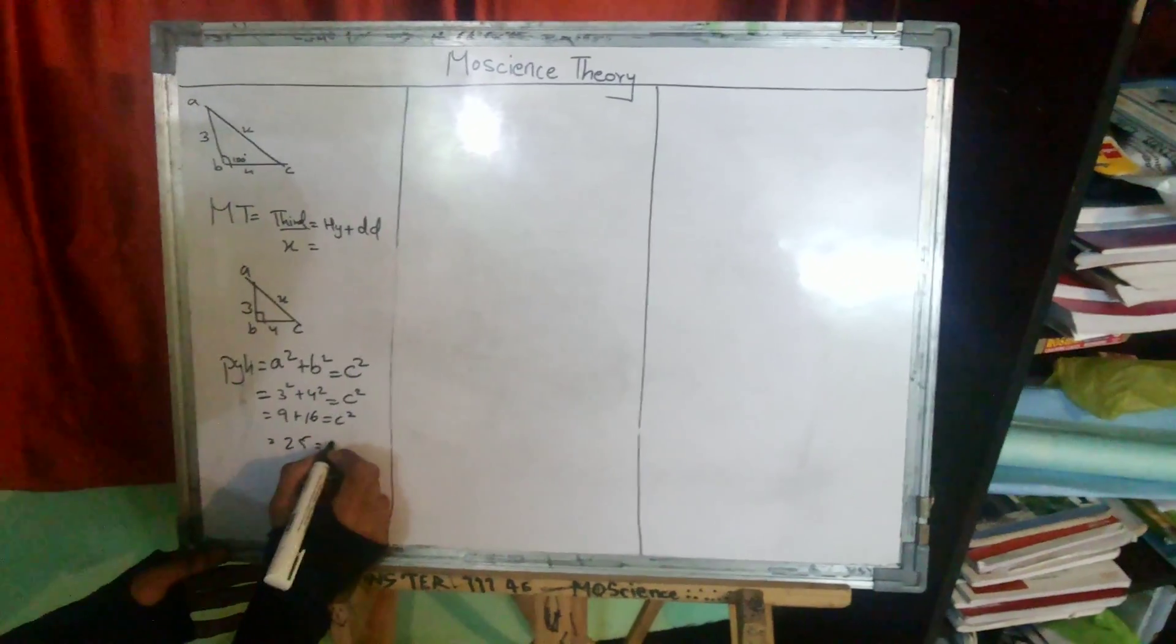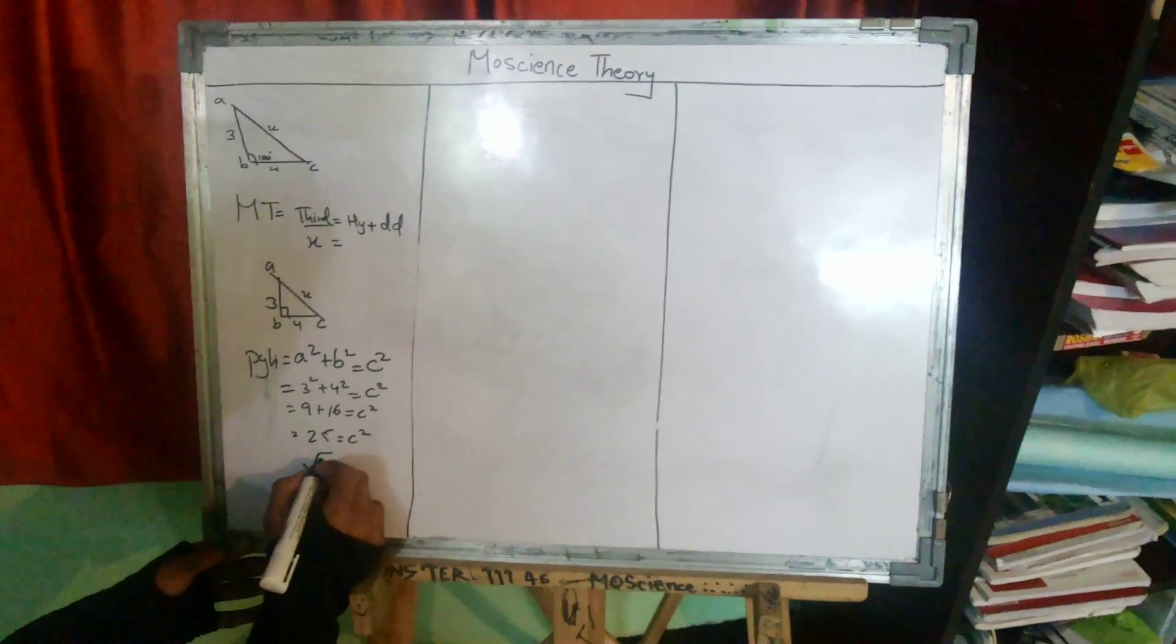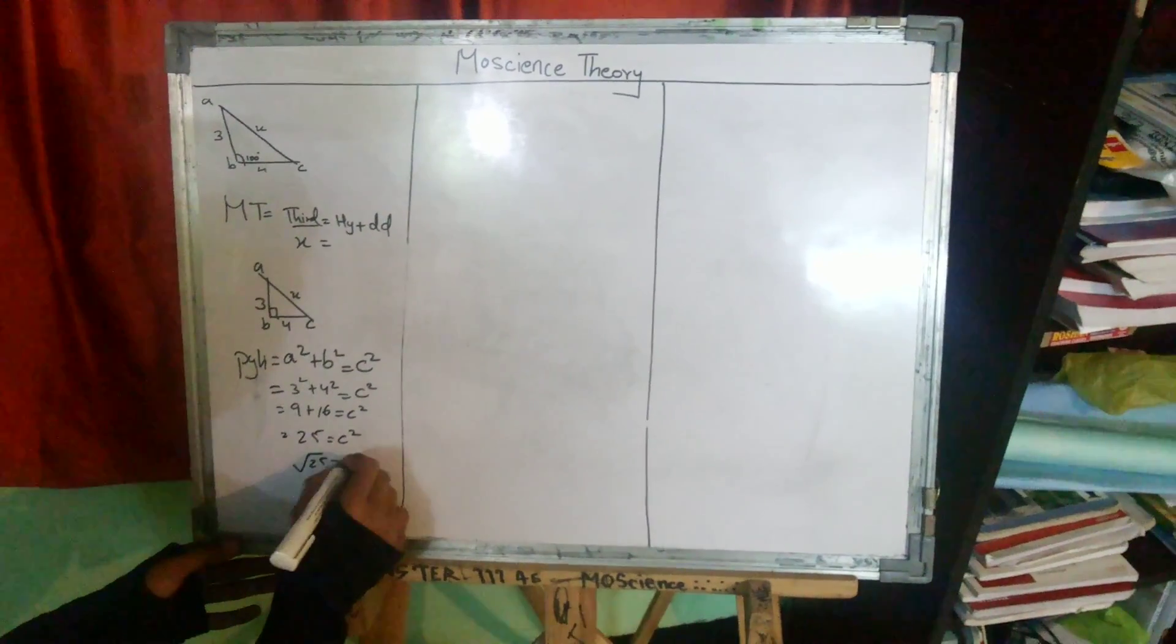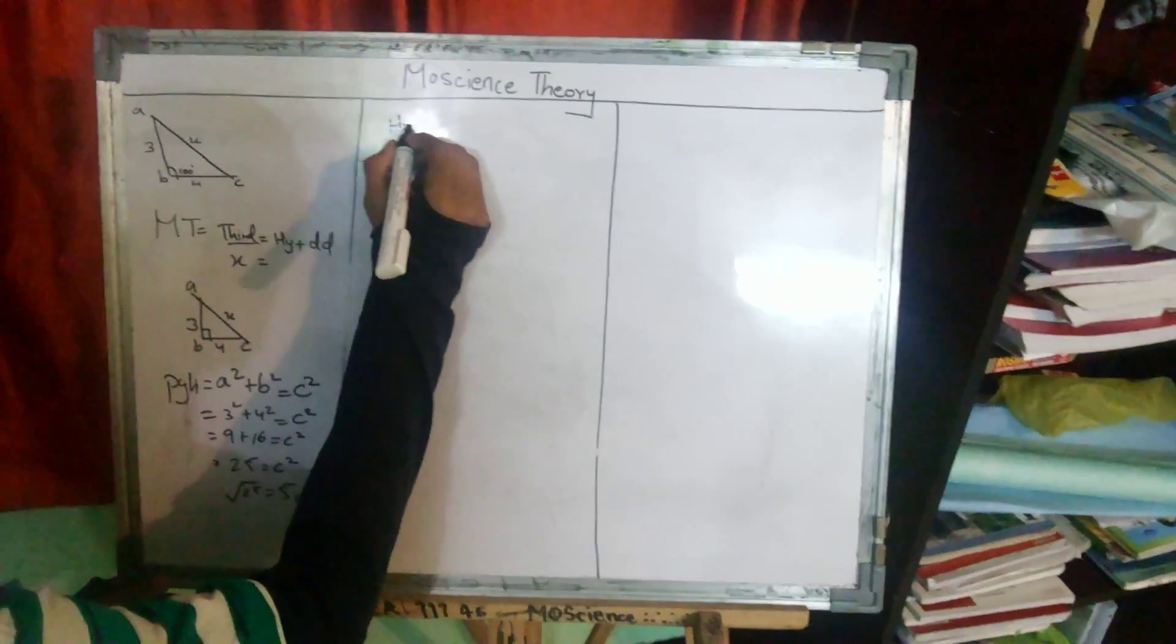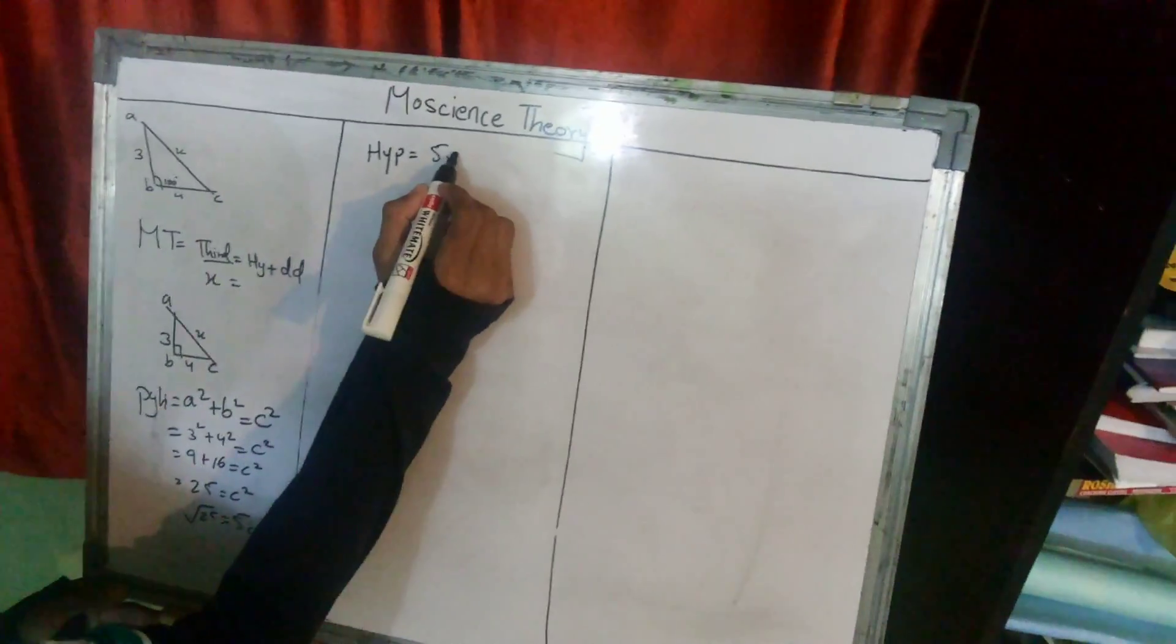25 is equal to C square. 25 root is equal to 5 centimeter. So hypotenuse is equal to 5 centimeter.